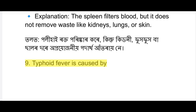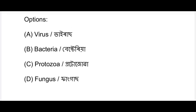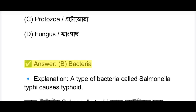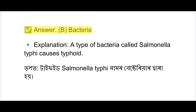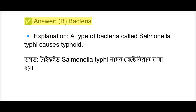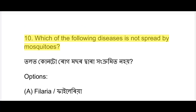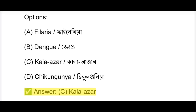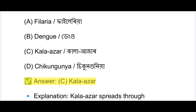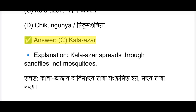Typhoid fever is caused by which of the following? Options: virus, bacteria, protozoa, fungus. The answer is bacteria - specifically Salmonella typhi. Next question: which of the following diseases is NOT spread by mosquitoes? Typhoid is not spread by mosquitoes; it is spread through contaminated food and water.